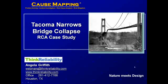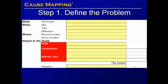This is a root cause analysis case study of the Tacoma Narrows Bridge Collapse. We begin on step one of the cause mapping program by defining the problem within the problem outline.